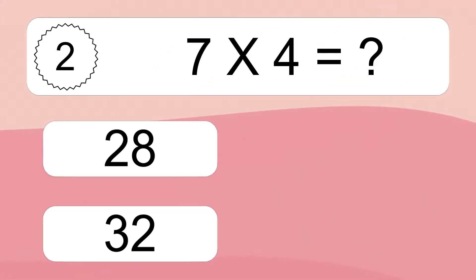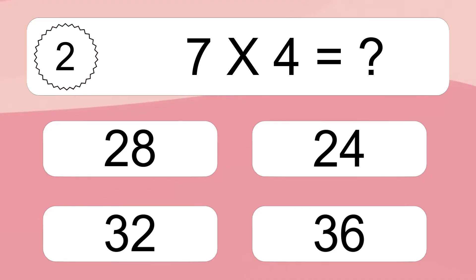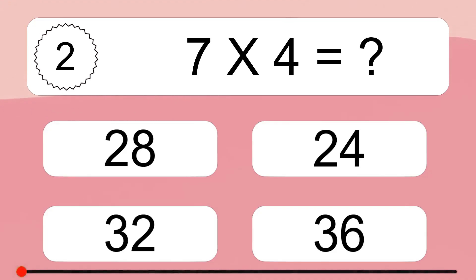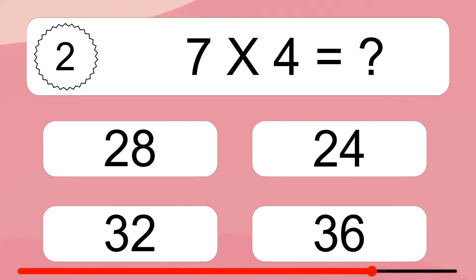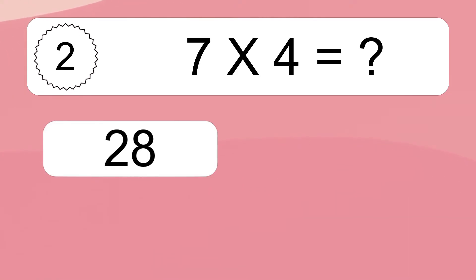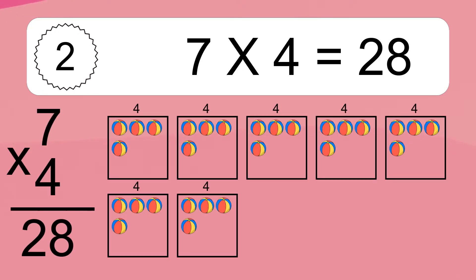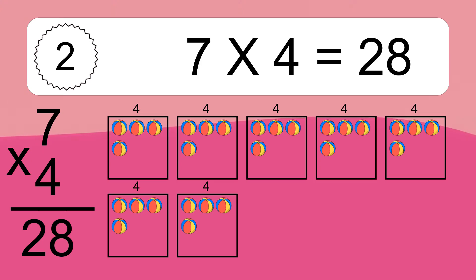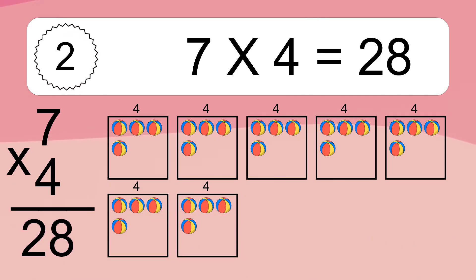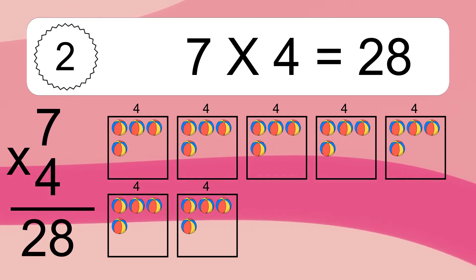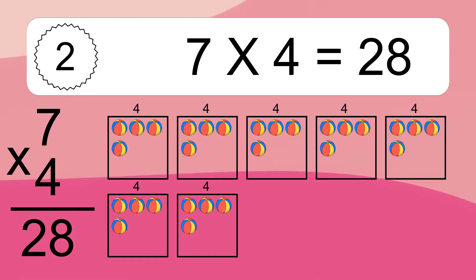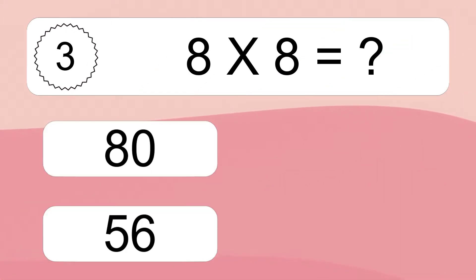7 times 4 equals what? 7 times 4 equals 28. We have 7 boxes, and each box has 4 colorful balls inside. If you count all the balls in all the boxes together, you will have 7 times 4 balls. This equals 28 balls.